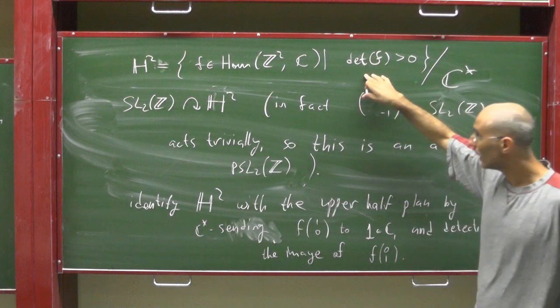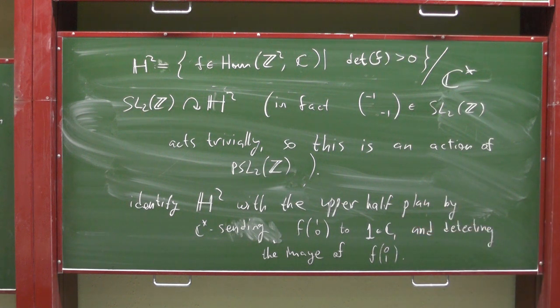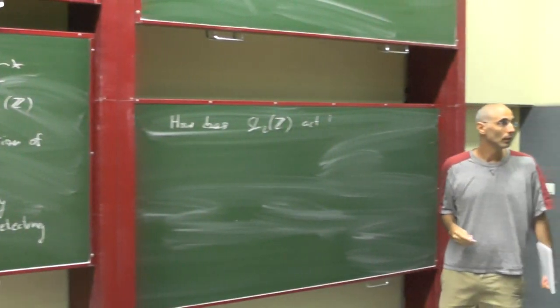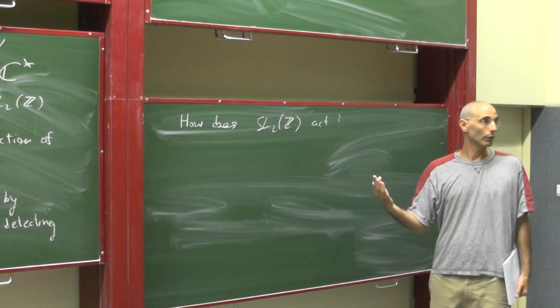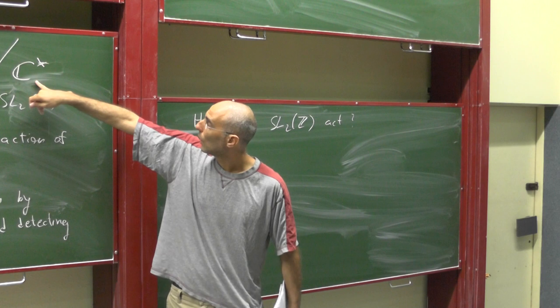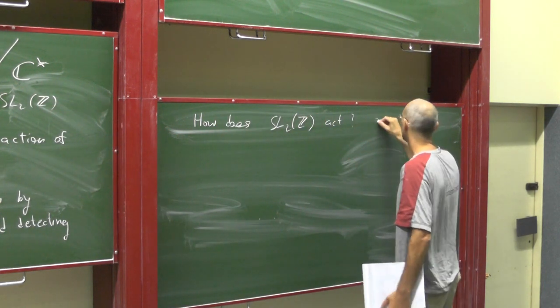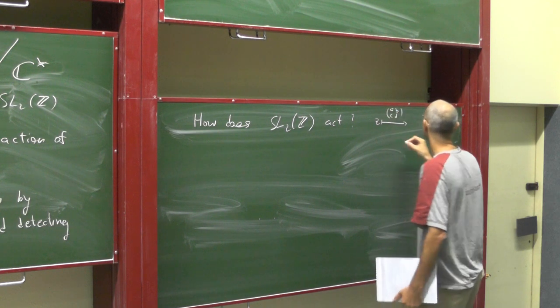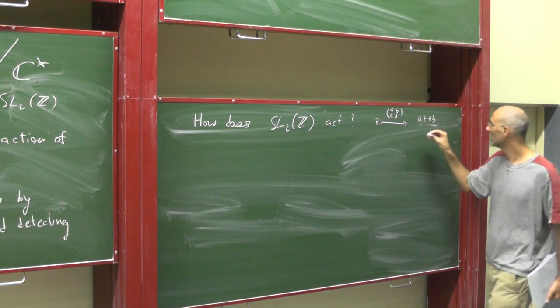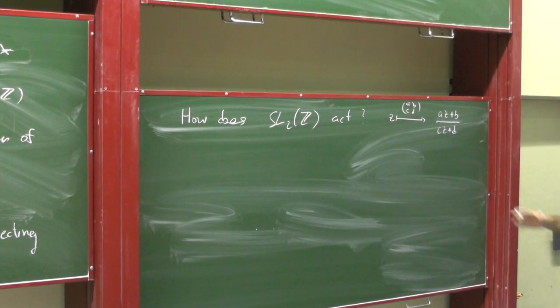I'm identifying that space with the upper half plane. Using this identification, how does SL2Z act? Please convince yourself that it acts by the natural formula for Möbius transformation. It acts by linear transformation. But because I'm always sending the first vector to 1, I just need to divide by its own image. Z is mapped by A, B, C, D into AZ plus B. This is the image of the vector Y. This is the image of the vector X. We just have to divide one by another.